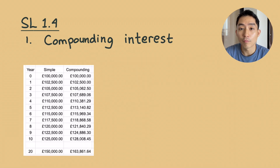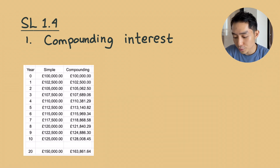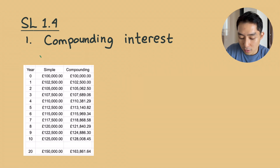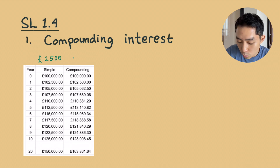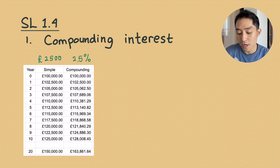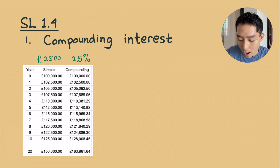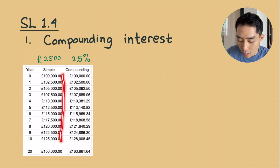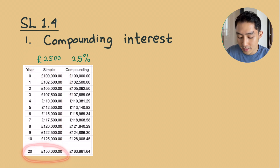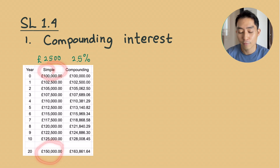Let's say you're putting money of 100,000 quid in the bank and the bank gives you two options. The first option is that you will get an additional 2,500 quid every year. The second option is you get 2.5% of your initial money every year. So the first time you put it, it is 100k in each case. On the simple interest, your money is just being added by 2.5k every year, and if we jump into year 20, this is the amount of money that you have, which means it has increased 50% from your initial money.